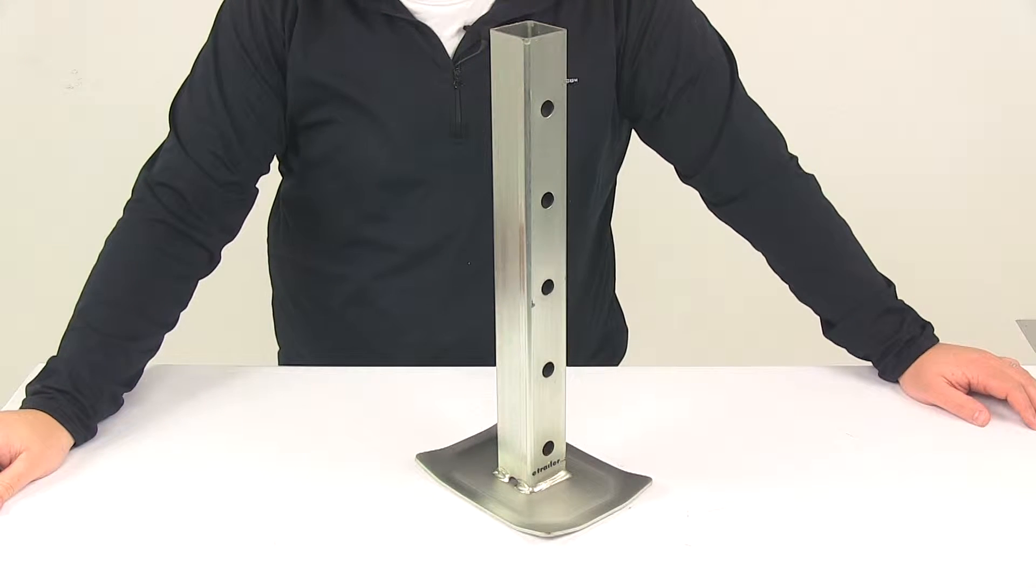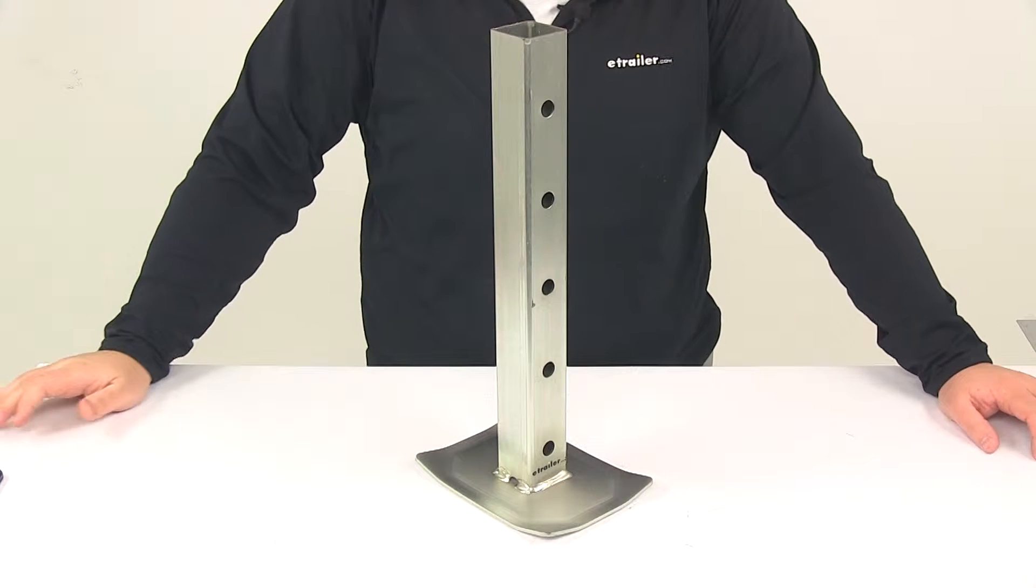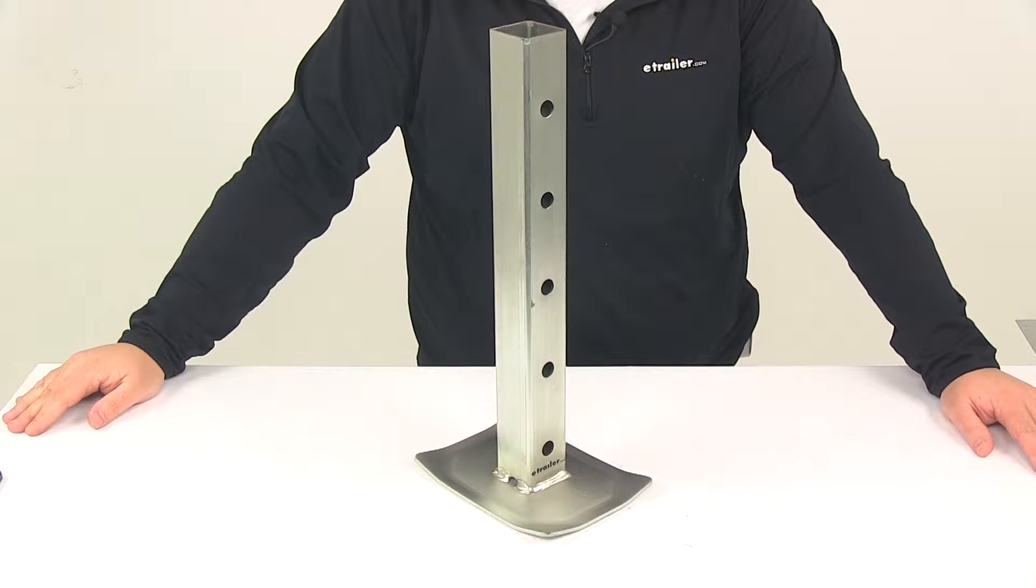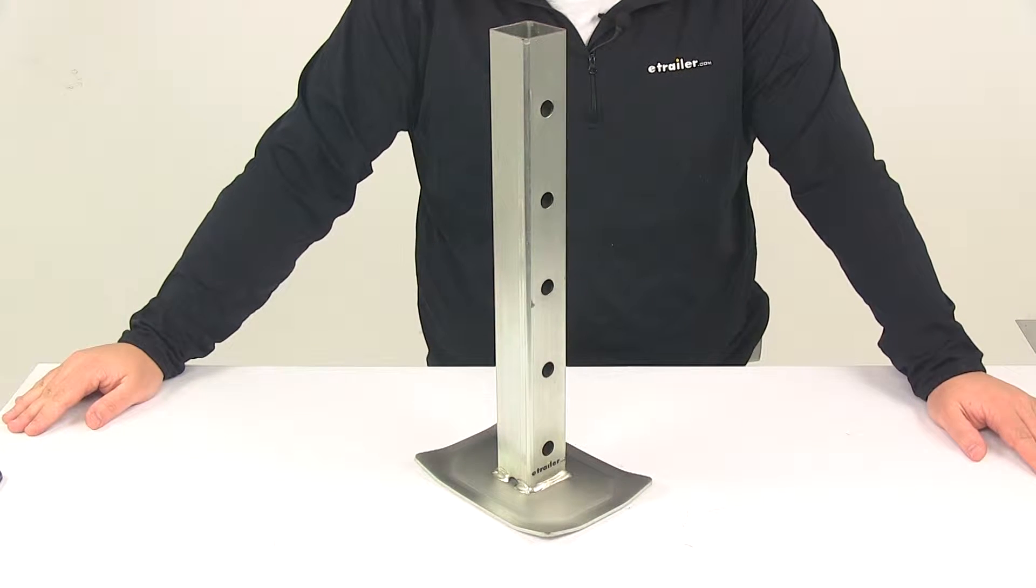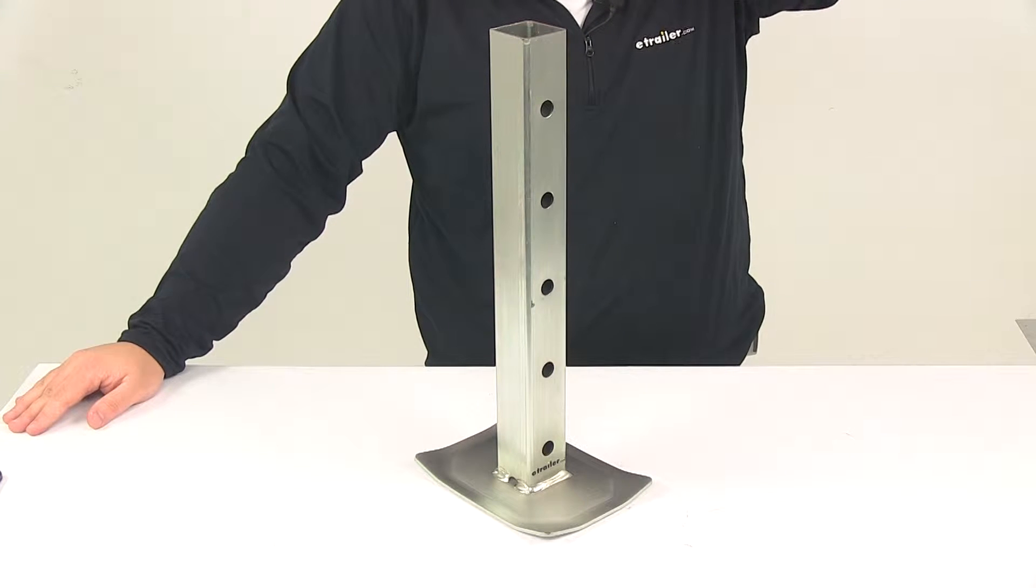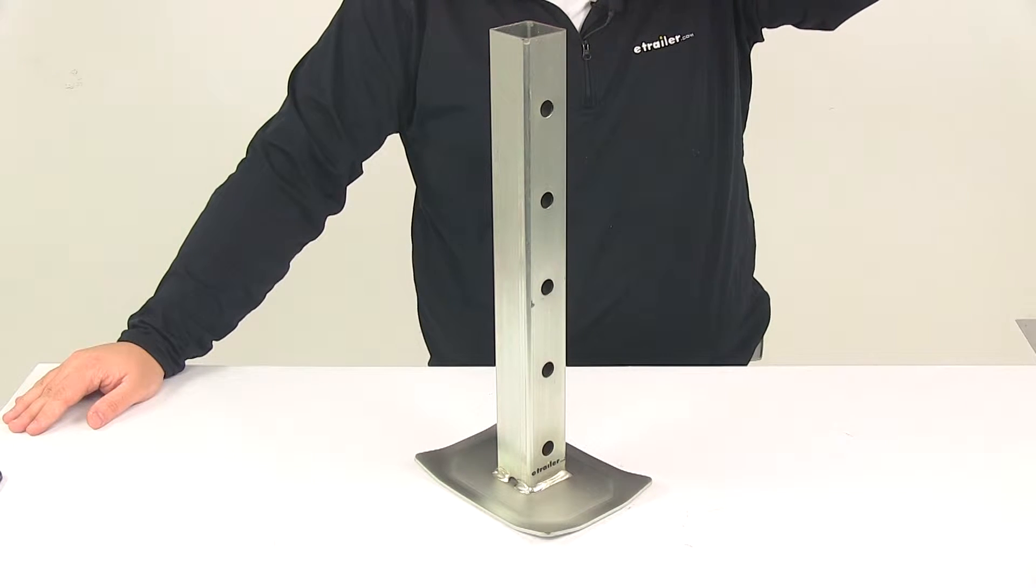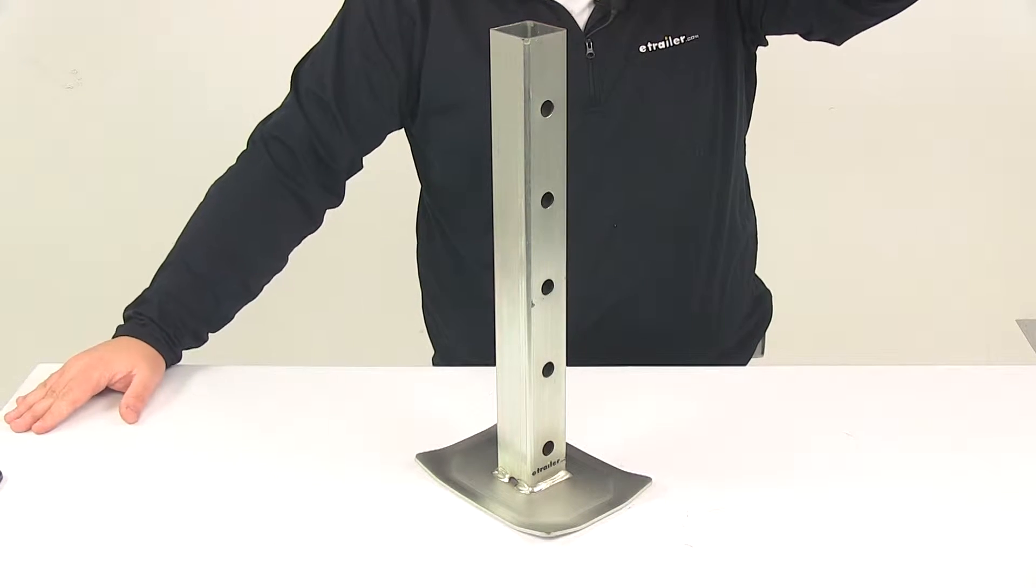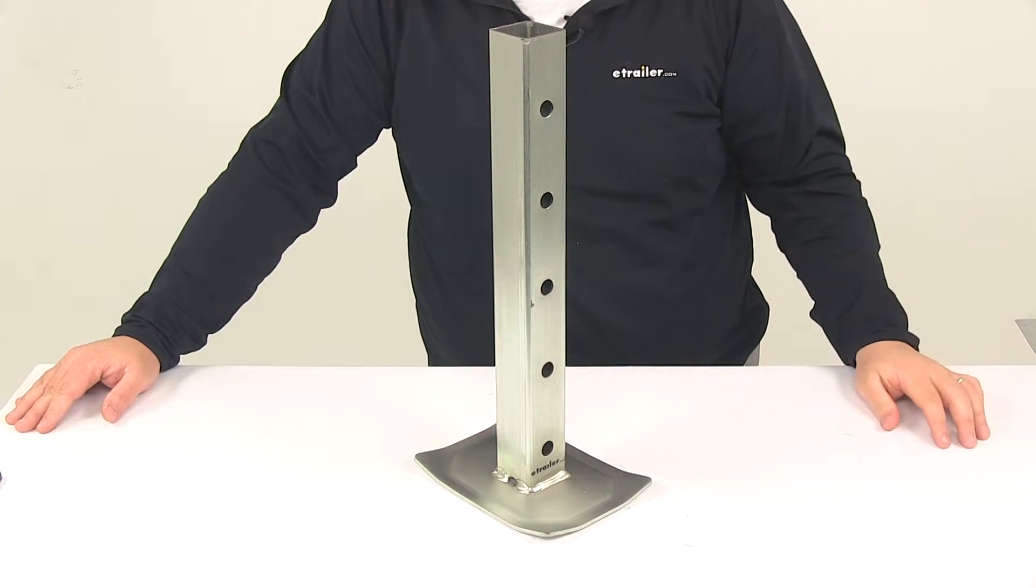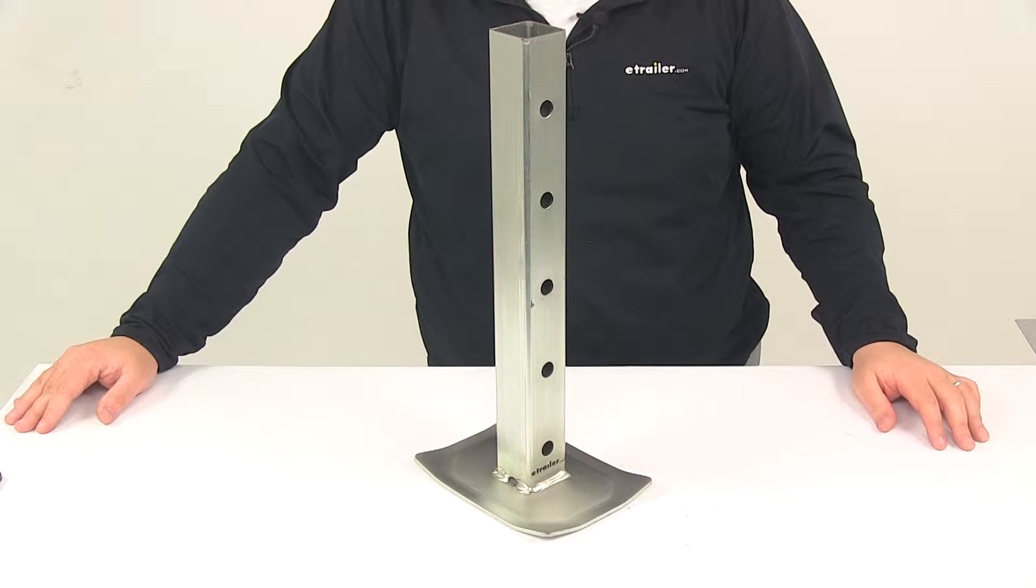Today we're taking a look at a replacement drop leg with footplate for square trailer jacks. This is designed as a replacement for your e-trailer or Ram square direct weld jack with 7,000 pound capacity. It's designed for use with the TJD-7000 series and can be used for other applications as well.